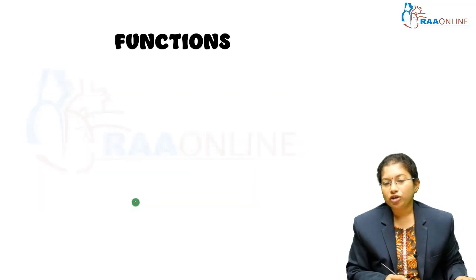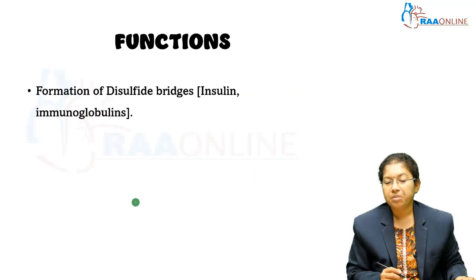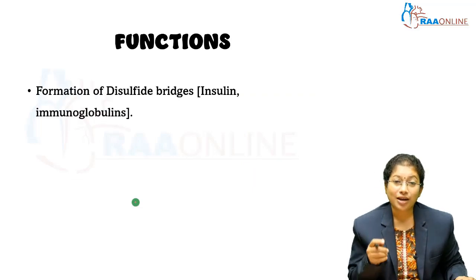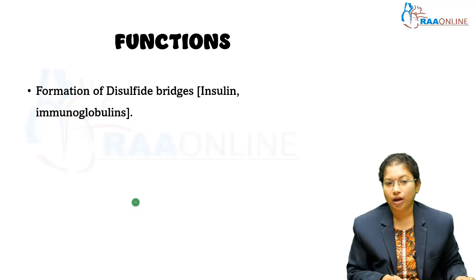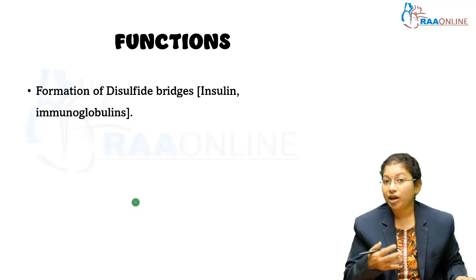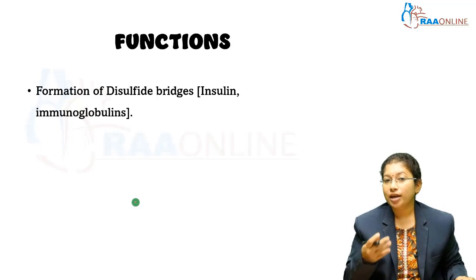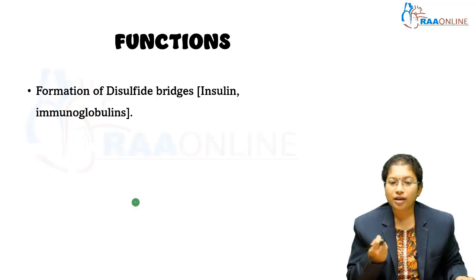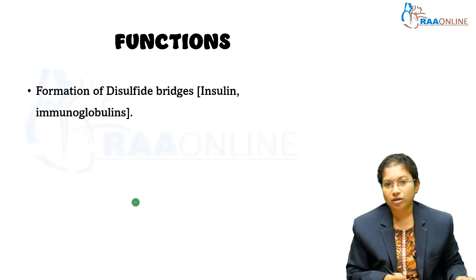What are the functions of sulphur in our body? The main function is that it forms disulphide bridges. For example, in insulin, it contains two polypeptide chains A and B, and you can see intra- and inter-chain disulphide bridges.